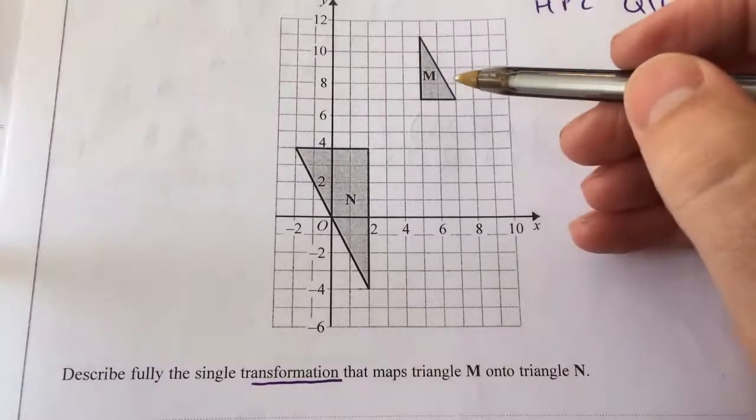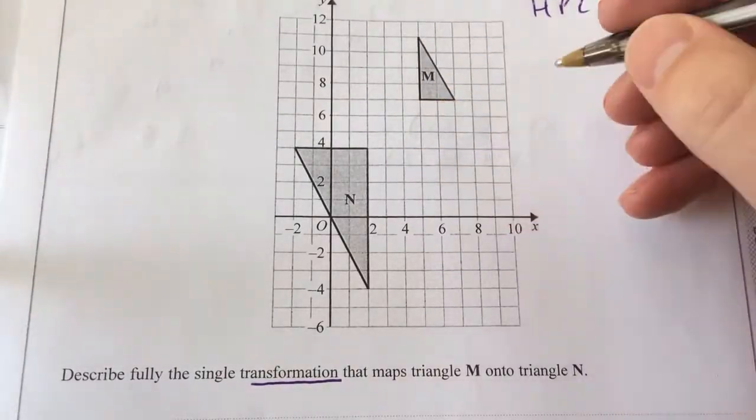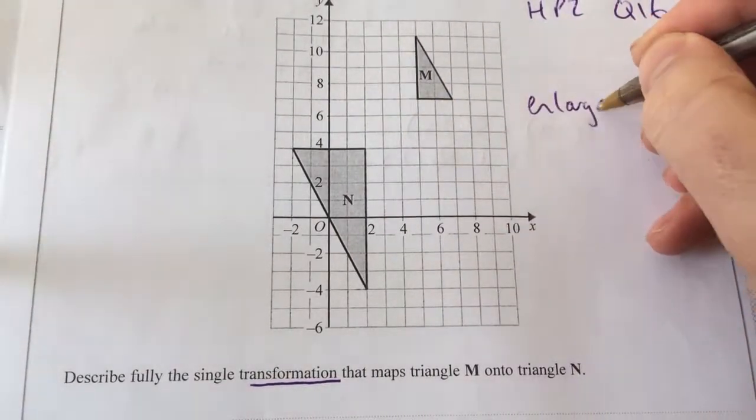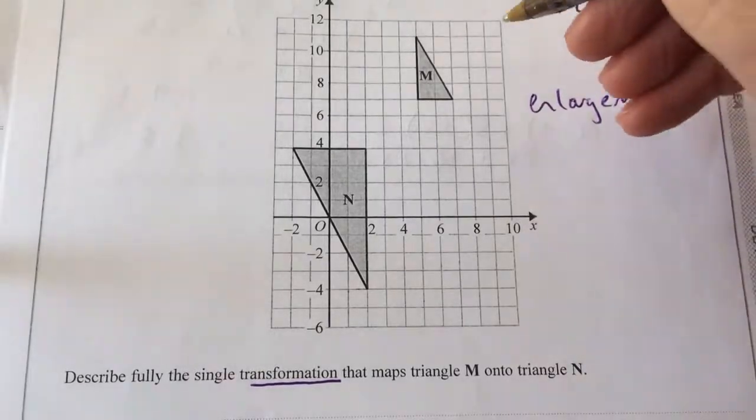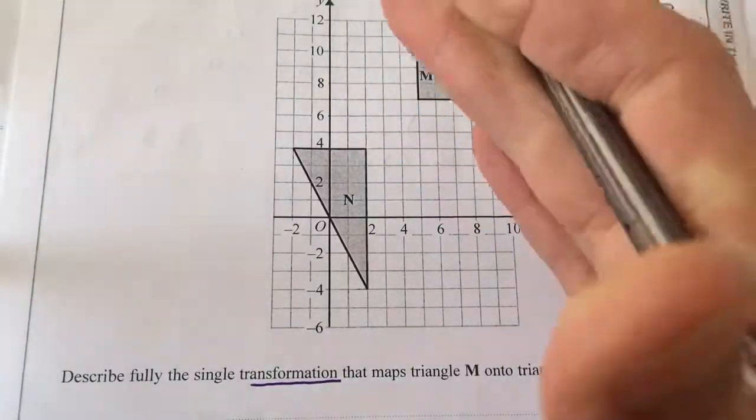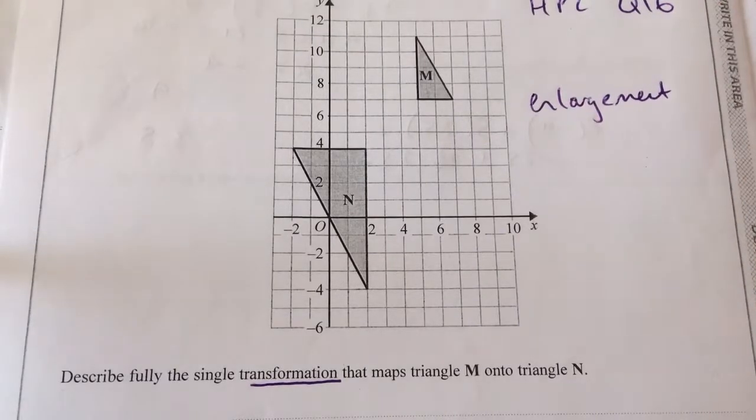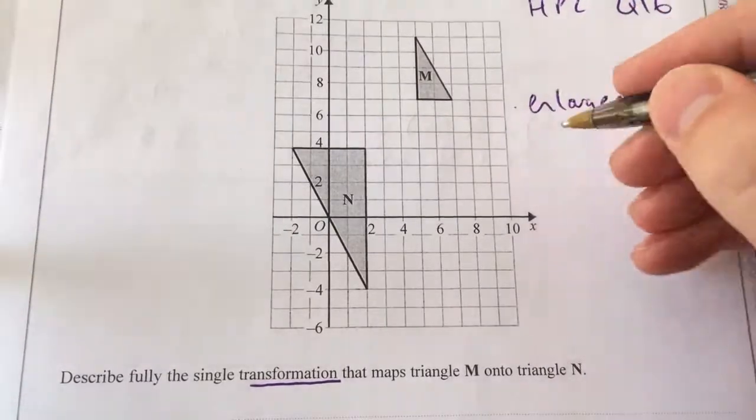If we look at it, we can see that they're different sizes, so it must be an enlargement. Although it has rotated, it's a different size. It's definitely not a reflection. It's definitely not a translation. So we know that it's an enlargement.